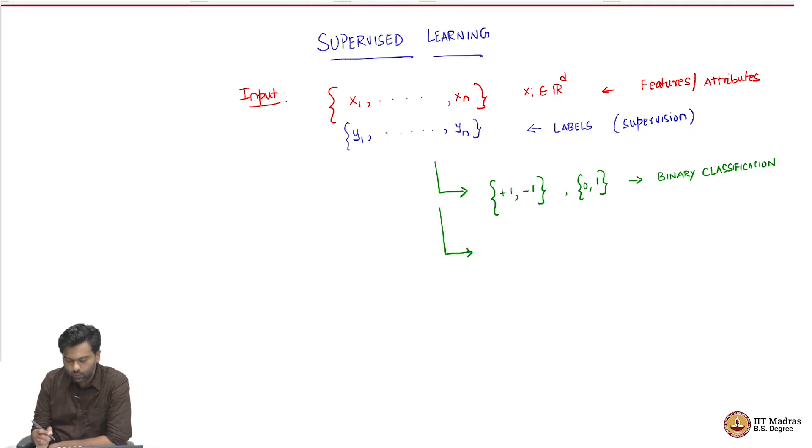Of course, you do not have to necessarily have just two labels, but let us quickly look at an example for binary classification before motivating other types of classification. So, let us say a simple example for this would be, given an email, classify whether it is spam or non-spam.